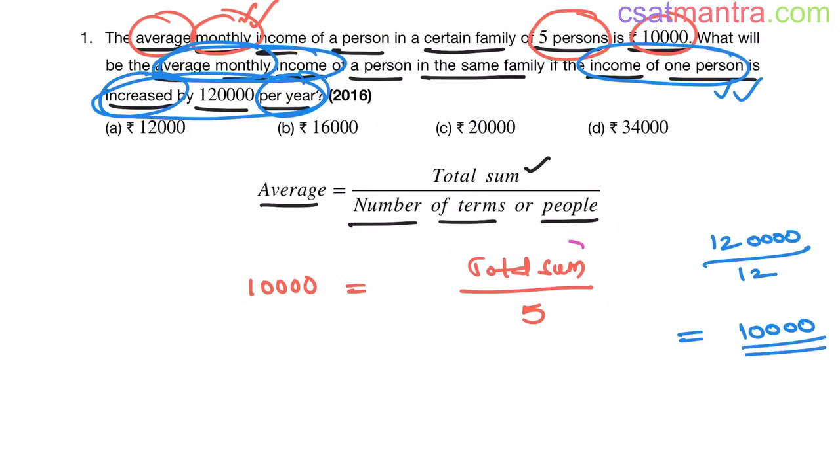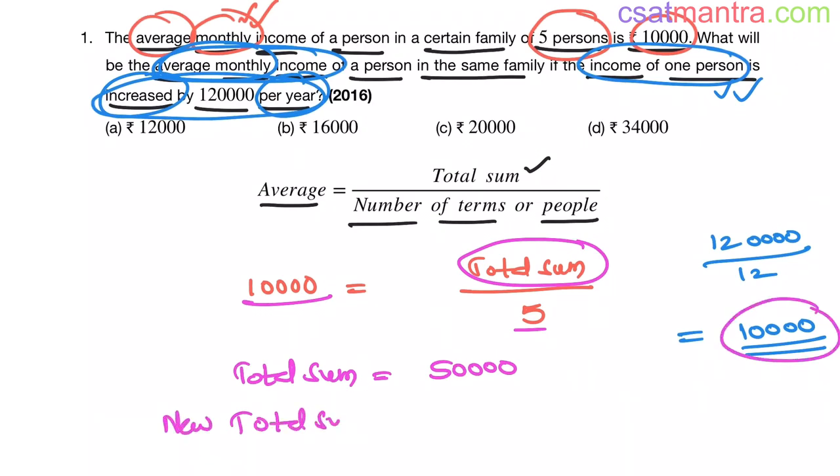Earlier the total sum, the total income of the family, total income is 5 into 10,000. That is 50,000. Now the total income, new total income after increase in 10,000. Now that would be this 50,000 plus 10,000 my friends. 50,000 plus 10,000. Now this is equal to 60,000.